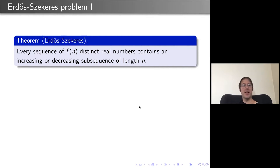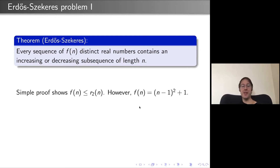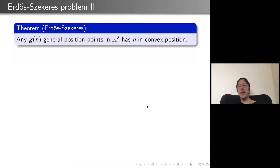A basic result of Erdős and Szekeres from the mid-1930s: if you have a long enough sequence of distinct real numbers, you have an increasing or decreasing subsequence of length n. One simple proof uses Ramsey's theorem — for a pair of elements, you put an edge if it's increasing and a non-edge if decreasing. Applying Ramsey gives F(n) ≤ R_2(n), exponential in n. However, F(n) is in fact (n−1)²+1, which is one exponential off.